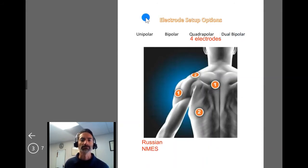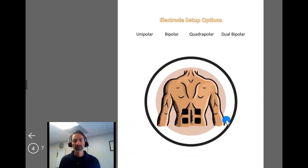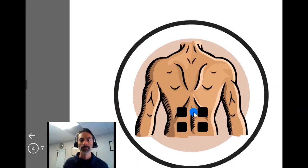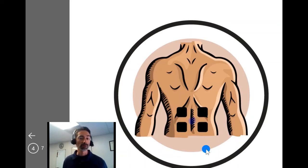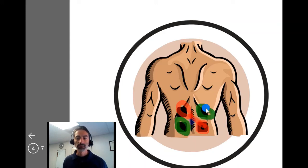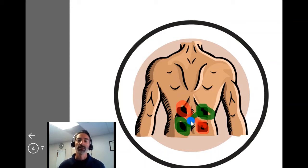Another example: if someone had low back pain centered in the middle, you might take channel one and send it interferentially one direction, then channel two crossing the other direction so the current interferes — creating a vector right around the middle of the spine where the pain is. That would be a quadrupolar setup for IFC.